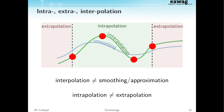You can use interpolation to do extrapolation, and people find this confusing — basically because the words are not cleverly chosen. So I invented a term: 'intrapolation,' which is the opposite of extrapolation. Intrapolation means whatever model you have, whether interpolating or smoothing, you use it to guess values within the domain of the observed data.